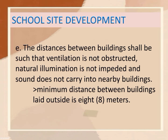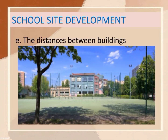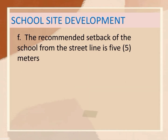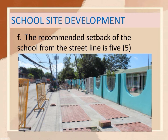The distances between buildings shall be such that ventilation is not obstructed, natural illumination is not impeded, and sound does not carry into nearby buildings. The minimum distance between buildings laid outside is 8 meters. The recommended setback of the school from the street line is 5 meters to sufficiently reduce intrusive noise.